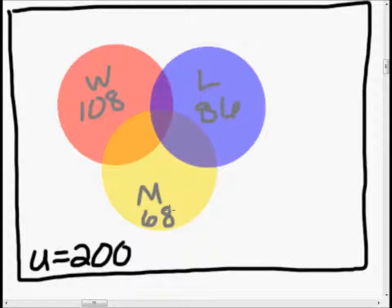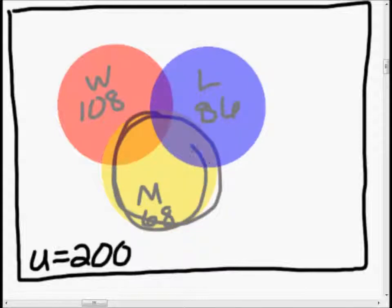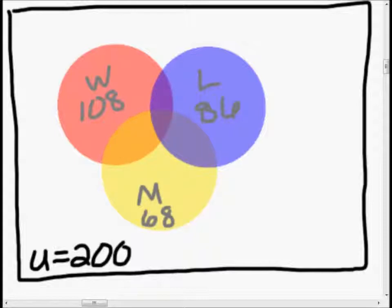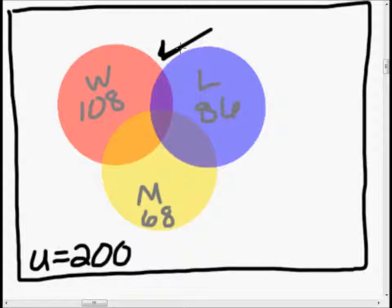Now, the first thing I want to point out is that all of this blue area is 86, all of this yellow area is 68, and all of this red area is 108. These overlap, and we need to care about that — that's kind of a big deal. We know that 41 of these people live in the west and in a large city, so that's this area right here. Let's label that: west intersection large city, and that's 41.